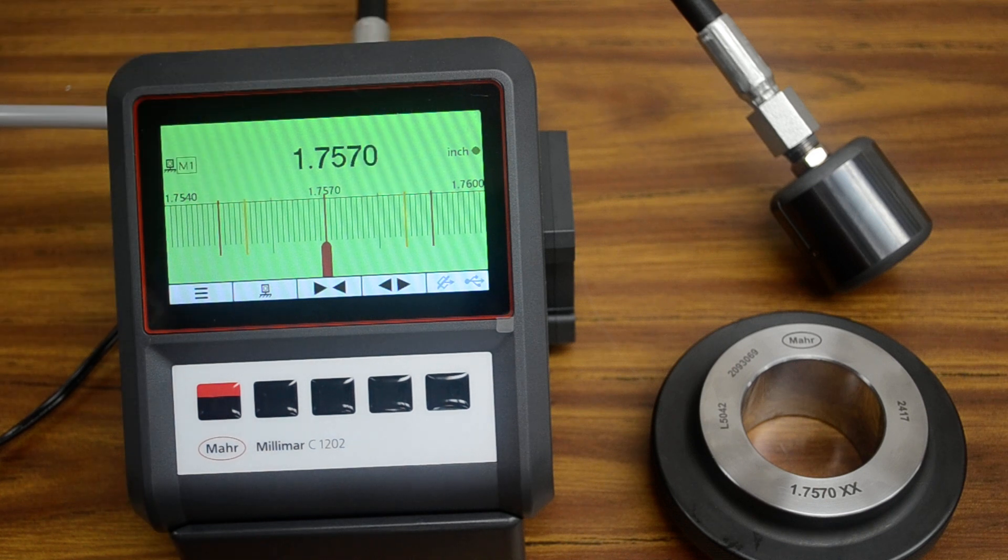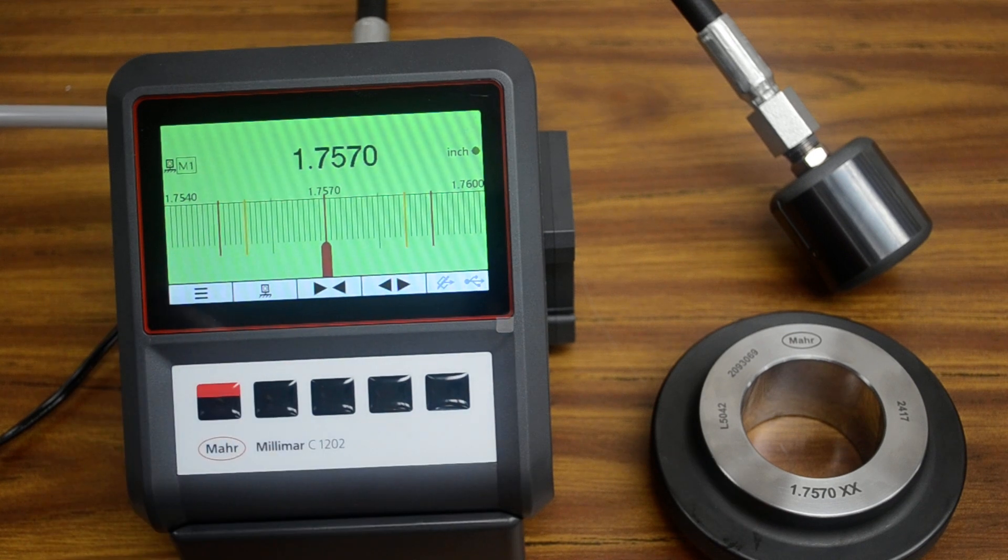The yellow bars inside are warning limits that just tell your machinist that they are getting close to a tolerance limit and maybe they need to make an adjustment to their machine or their process. Those are entirely optional, both the tolerance limits and the warning limits. You can set whatever value you want for those, and we'll show you how to do that right now.